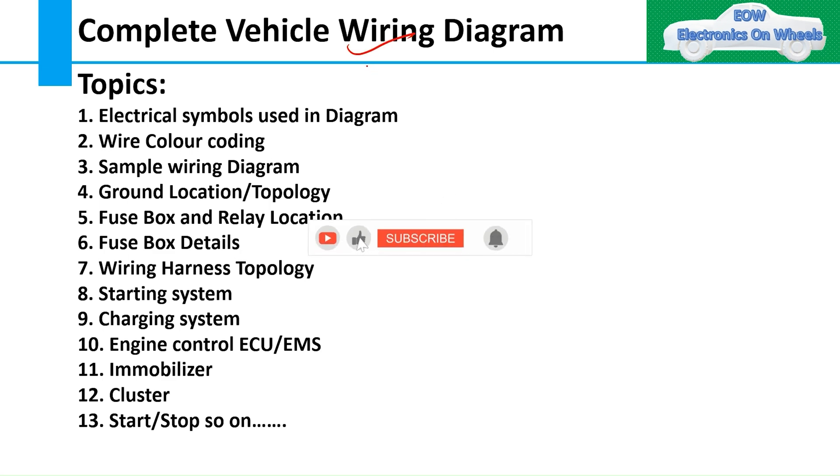In this series we're going to discuss the following points. First, we'll see how electrical symbols are used in wiring diagrams in all automotives, then wire color coding, how to identify which wire is going for which purpose. There are defined functions for particular wire colors. Third, we'll take one sample wiring diagram and try to read it based on the symbols and wire color coding.